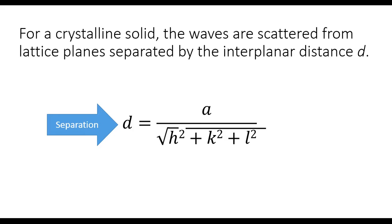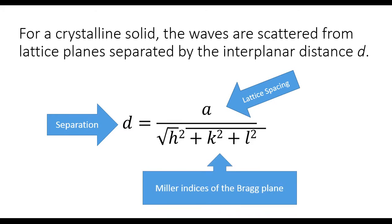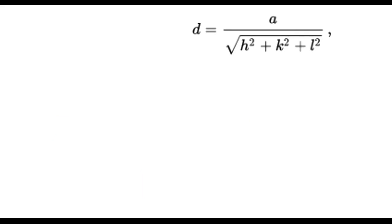d is the separation and a is the lattice spacing. The values h, k, and l are the Miller indices of the Bragg plane. Here, these are the plane's values.